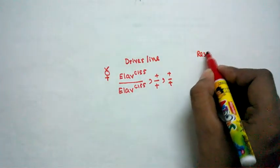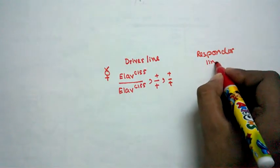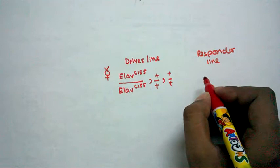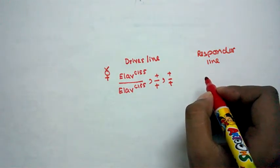On another side, we have to take the responder line. In the responder line, we have the particular construct for RNAi of the particular gene we want to knock down.